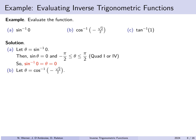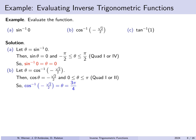For part b, let theta be the inverse cosine of minus root 2 over 2. In other words, theta is an angle whose cosine is minus root 2 over 2, and we are between 0 and pi. The answer is 3 pi over 4.